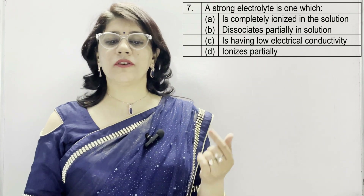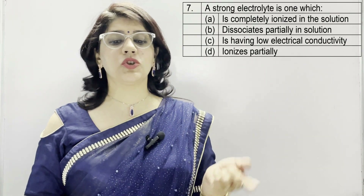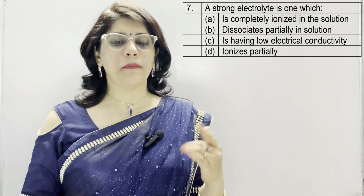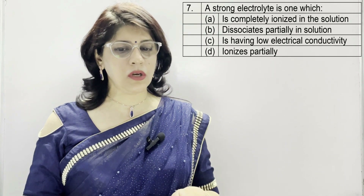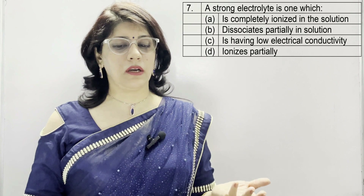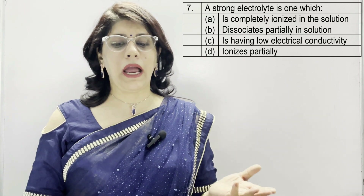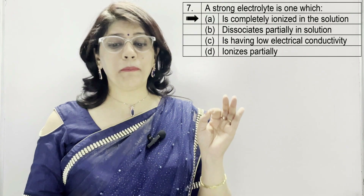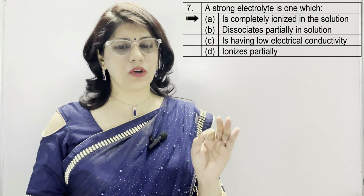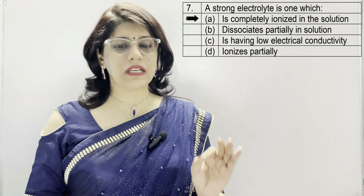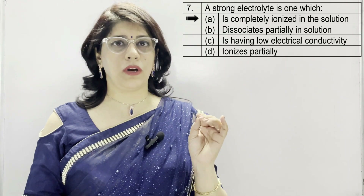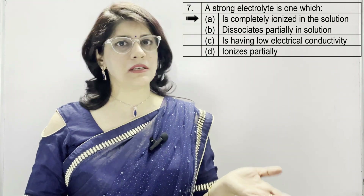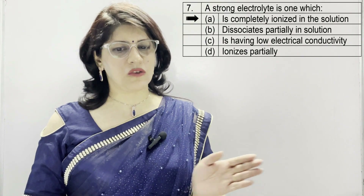Coming to the next question: a strong electrolyte is one which — A: completely ionized in the solution, B: dissociates partially in the solution, C: having low electrical conductivity, D: ionizes partially. The correct option is A — completely ionized in the solution — that is why it is known as a strong electrolyte. An electrolyte which completely ionizes is strong; partially ionizes is weak.